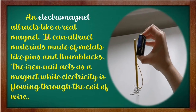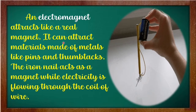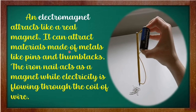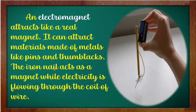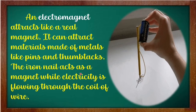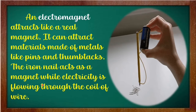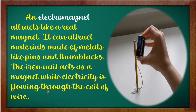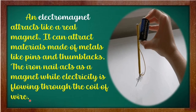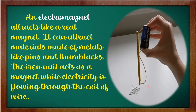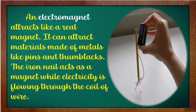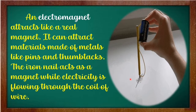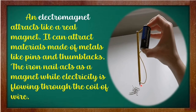An electromagnet attracts like a real magnet. It can attract materials made of metals, like pins and thumbtacks. The iron nail acts as a magnet while electricity is flowing through the coil of wire, like this one in the video or GIF example. It attracts the pins.